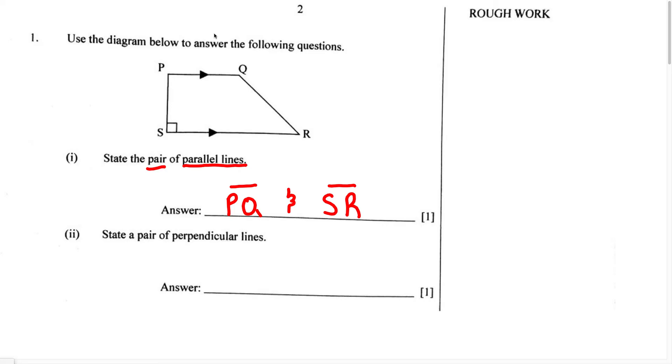Now the second part of this question says, state a pair of perpendicular lines. So they want us to state a pair, which means two, of perpendicular lines. So it is very important that you understand and remember what are perpendicular lines. We know perpendicular lines are going to be lines that intersect and form a right angle, which equals to 90 degrees.